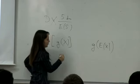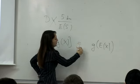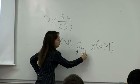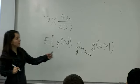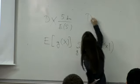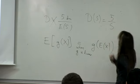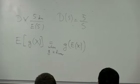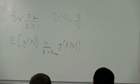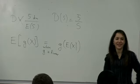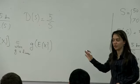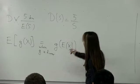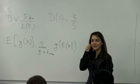They are only equal when the function g is linear. The function here is d(s) = 5/s, which is a convex function. When g is convex, g of E[x] is less than E[g(x)].